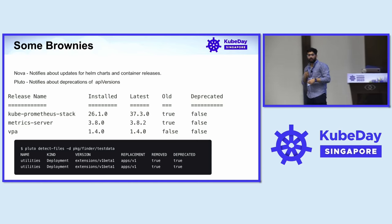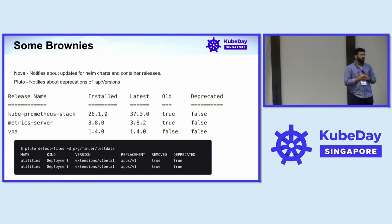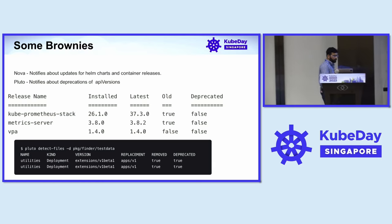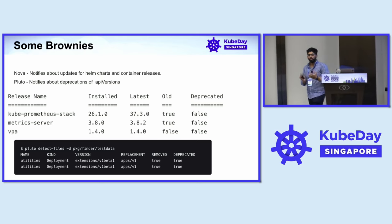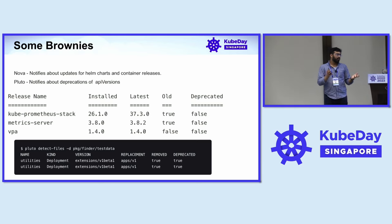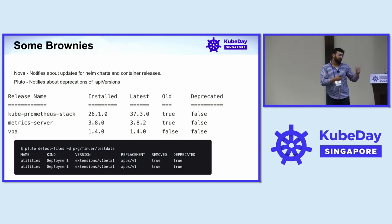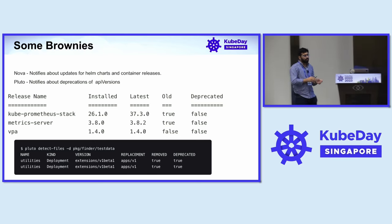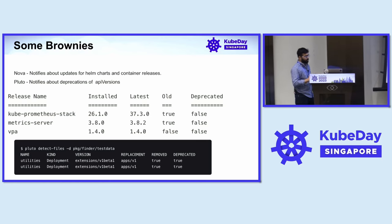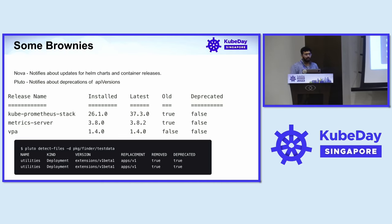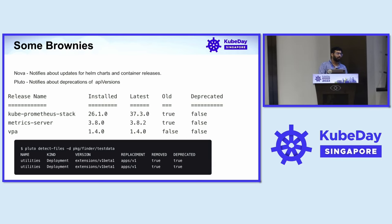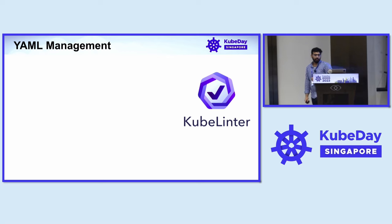Nova is a tool that notifies you when a Helm chart is deprecated or has container release issues. Pluto identifies deprecated Kubernetes API versions — whenever a Kubernetes version is rolled out, previous API versions are deprecated, and Pluto identifies them. If your infrastructure is cloud-specific, the cloud vendor handles most of this, but for on-prem you can definitely try Pluto.